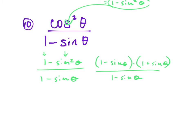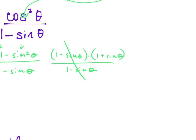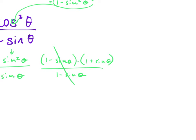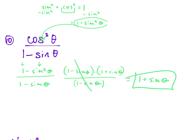Cancel the (1 minus sine) terms since we're multiplying, and we're left with 1 plus sine θ. This is a good one to know — we made it longer first to then simplify further.